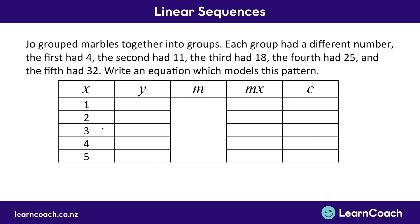In the Y column we put our sequence — the first number is 4, the second is 11, the third is 18, the fourth is 25, and the fifth is 32. For M, we find the difference between each Y value: the difference between 4 and 11 is 7, between 11 and 18 is also 7, 18 to 25 is 7, and 25 to 32 is 7 as well. So our M is 7.